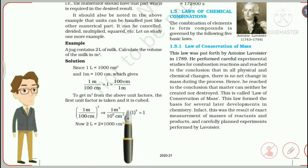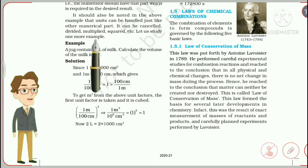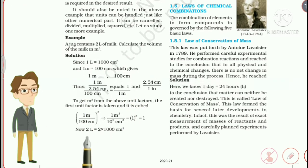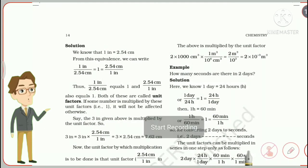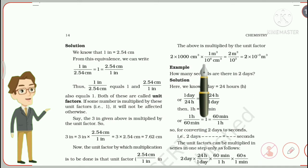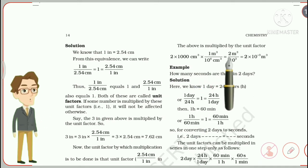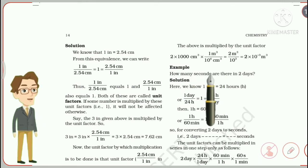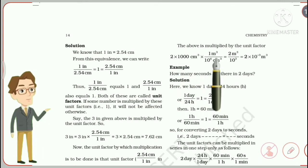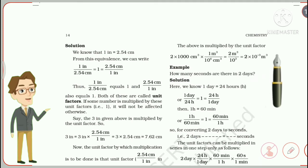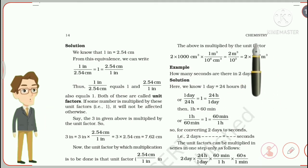So 2 liters = 2 × 1000 cm³. Now multiply by (1 m³ / 10⁶ cm³): the cm³ units cancel, and 10³ / 10⁶ = 10⁻³. Therefore 2 liters = 2 × 10⁻³ meter cubed. This is how we converted liters to meter cubed.